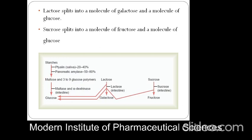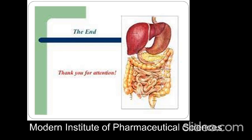The monomers of carbohydrates — such as glucose, lactose, and fructose — are absorbed in the villi of the small intestine. Thank you.